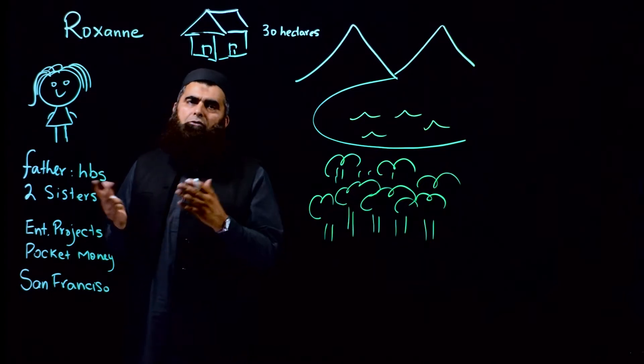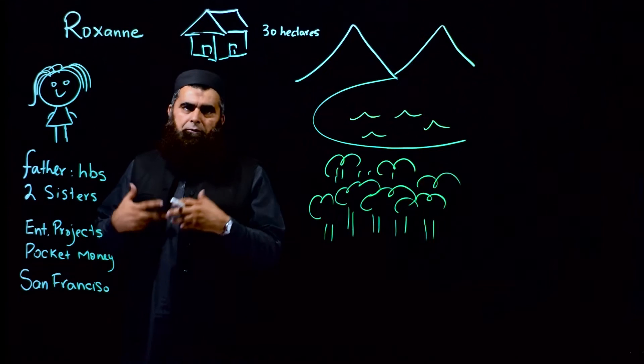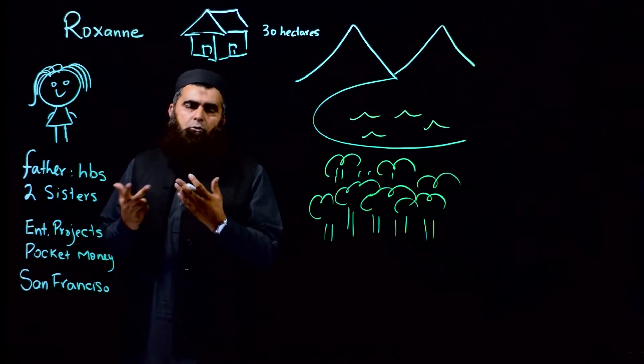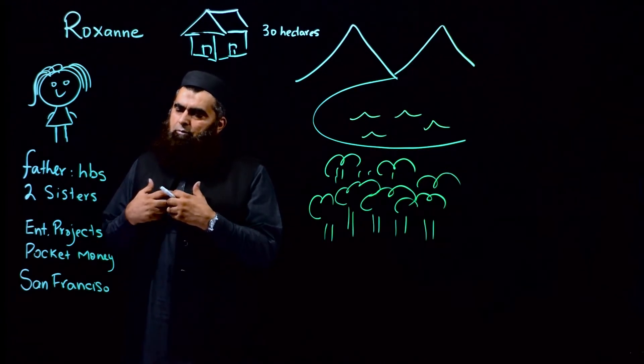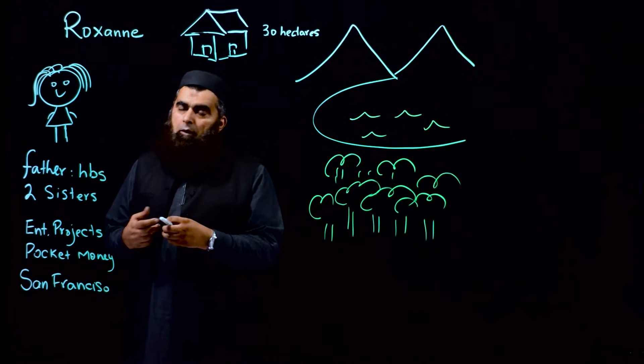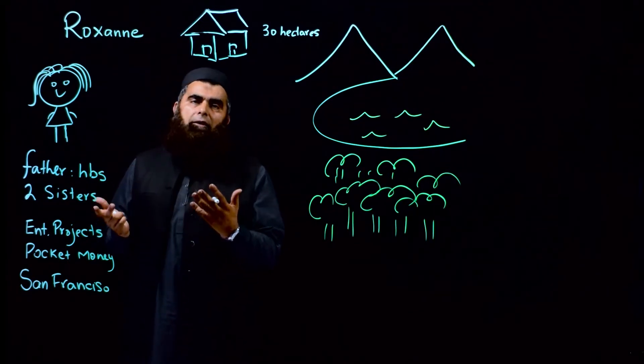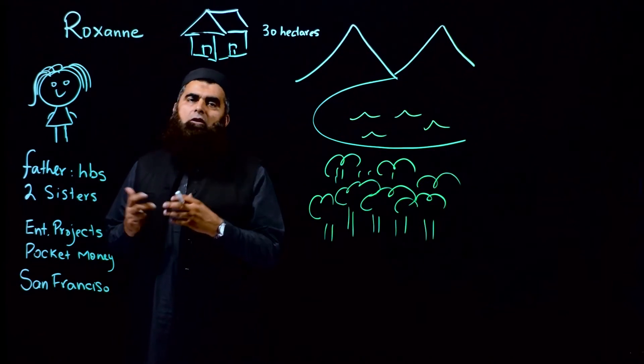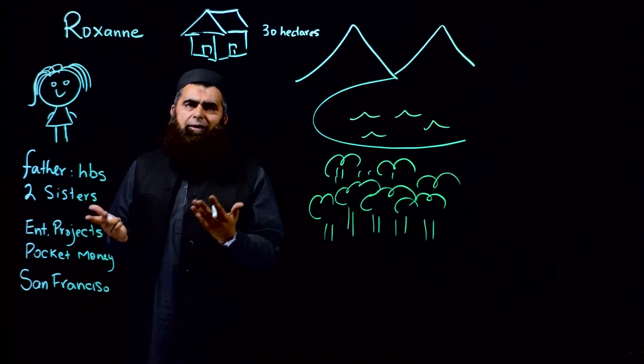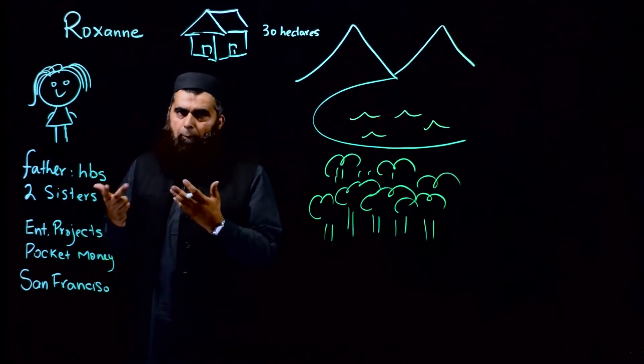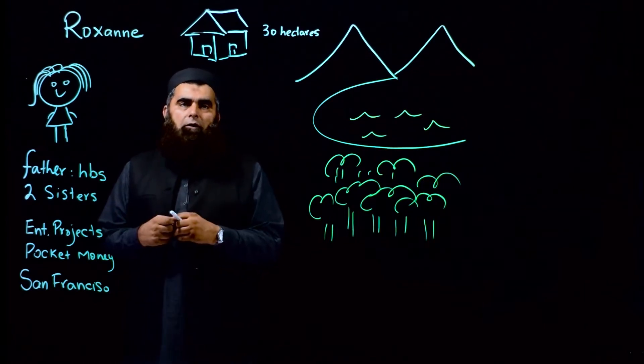The other two sisters loved business administration courses and they were obsessed with that. They wanted to go into that. Roxanne turned out to be a very different lady and she was called the black sheep of the family. She was altogether different in her pursuits, in her likings and dislikes. Eventually as she grew up, she developed a different taste. She started loving nature, agriculture, and animals.